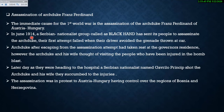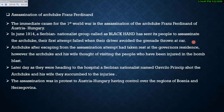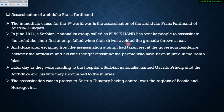In June 1914, a Serbian nationalist group called the Black Hand sent its people to assassinate the Archduke. Their first attempt failed when their driver avoided a grenade thrown at the car. When the Archduke went to Sarajevo to observe military practice and assess political situations, the Black Hand attempted assassination through grenade bombing, but the driver's cleverness allowed the Archduke to escape.